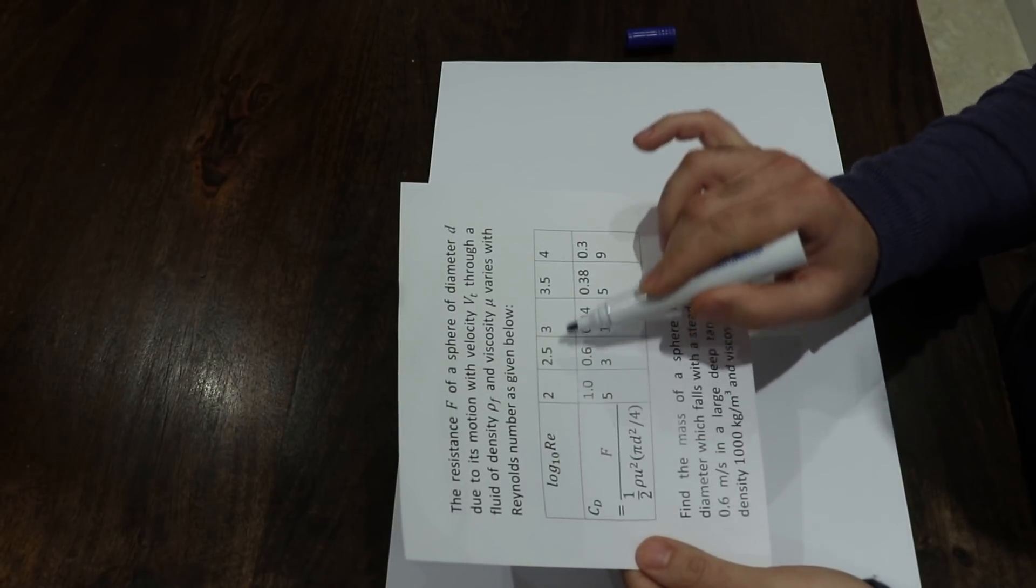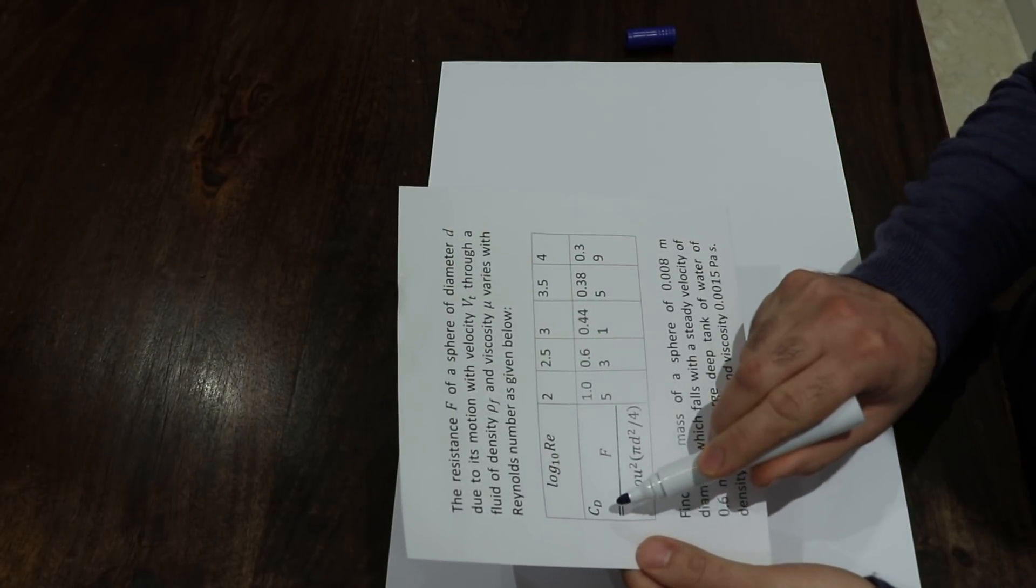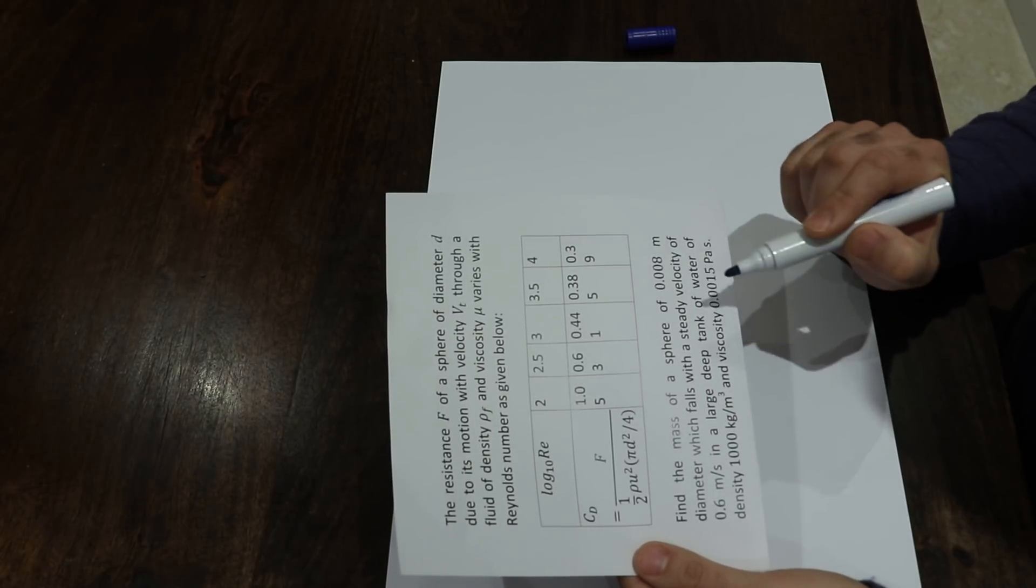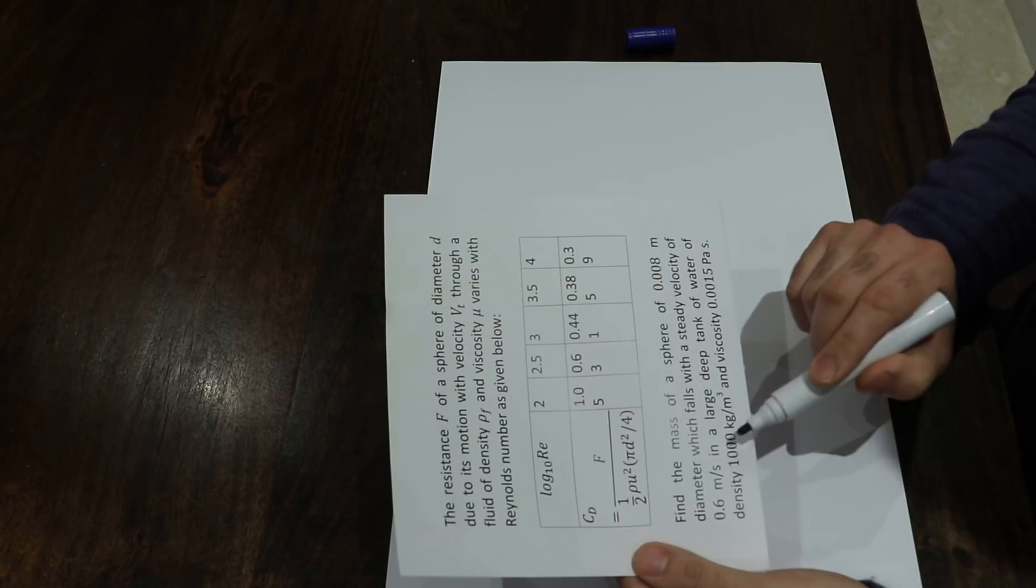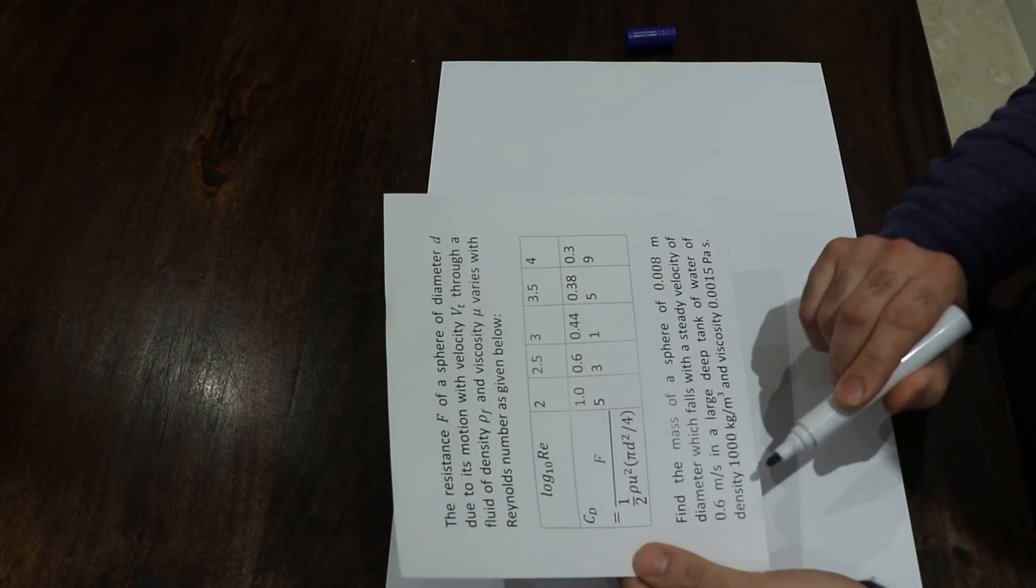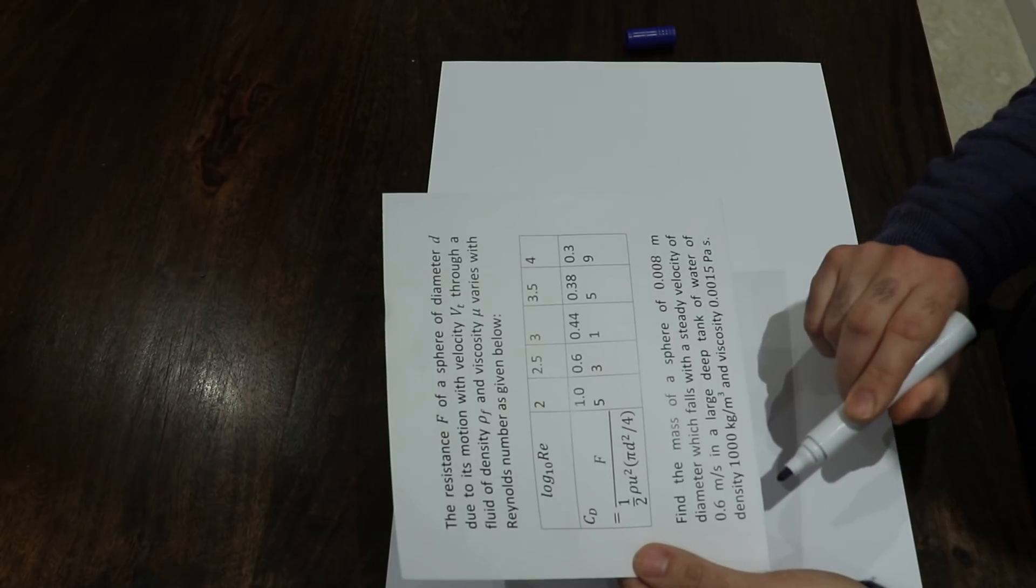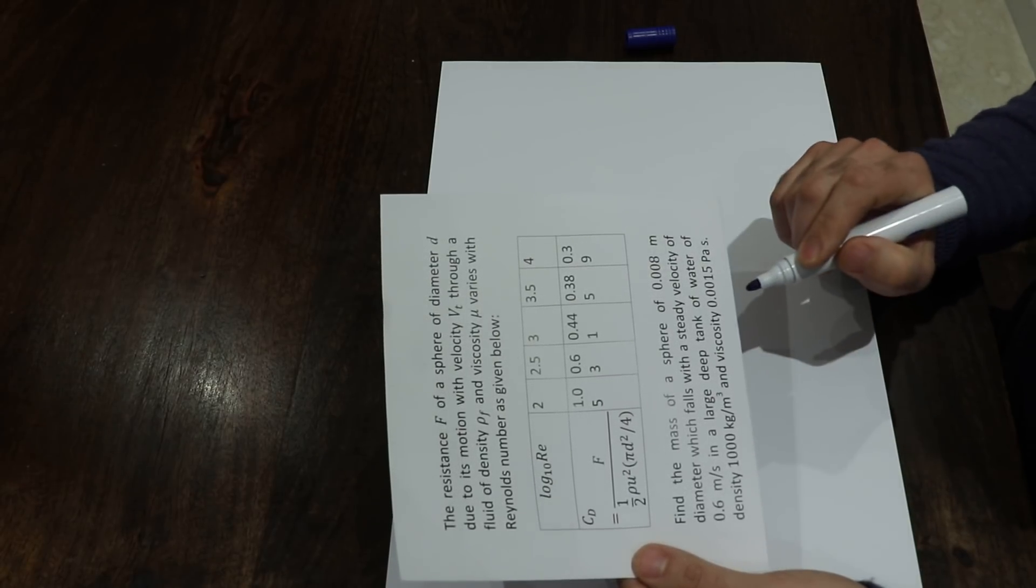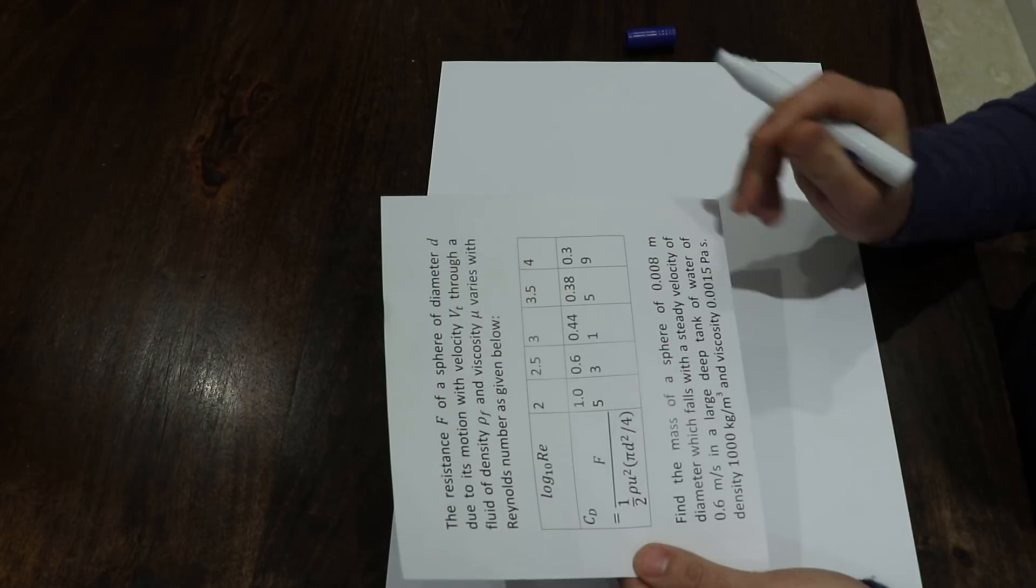For different values of the Reynolds number, the drag coefficient cd is given here. Find the mass of a sphere of 0.008 meter diameter which falls with a steady velocity of 0.6 meters per second in a large deep tank of water of density 1,000 kg/m³ and viscosity 0.0015 Pascal-seconds.